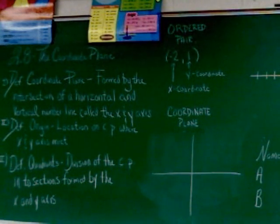And finally, the definition of quadrants. Quadrants are defined as the division of the coordinate plane into sections formed by the x and y axis.